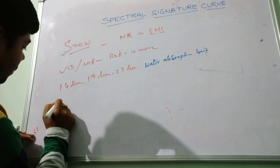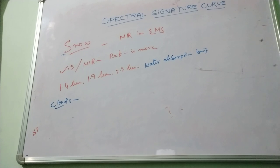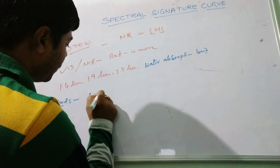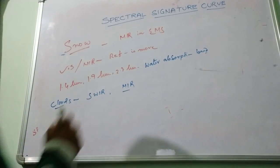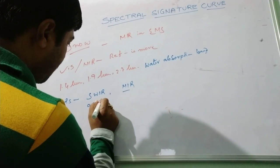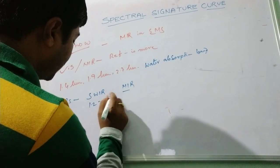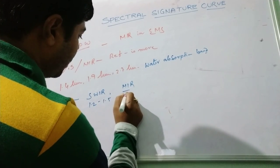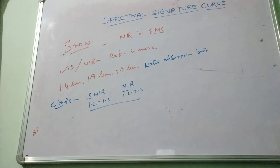In the case of clouds, much more energy is reflected in the short wave infrared band and the middle infrared domains — that is, wavelengths of 1.22, 1.5, and 1.6 to 2.8 micrometer. In this wavelength range, a much higher reflectance has been found for clouds.